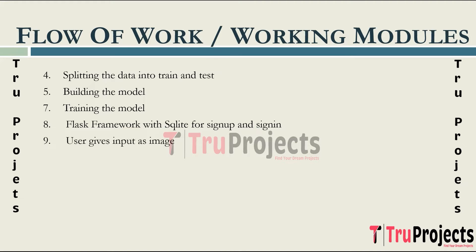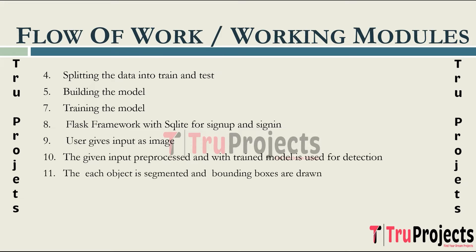The next step allows users to input images into the system for processing. The input image undergoes pre-processing using similar techniques as the earlier steps, after which the pre-trained model is used to detect objects. The identified objects are then segmented and bounding boxes are drawn around them, visually representing the recognized objects. Finally, the processed image with detected objects and bounding boxes is displayed to the user, showcasing the model's ability to identify and localize objects in the provided images.